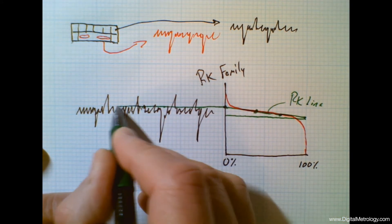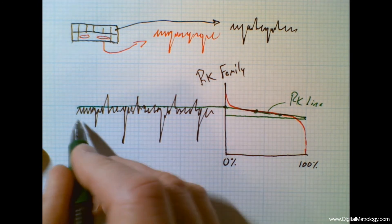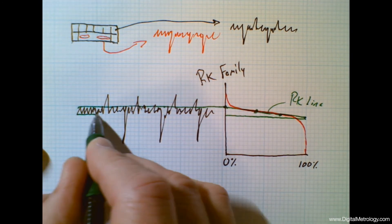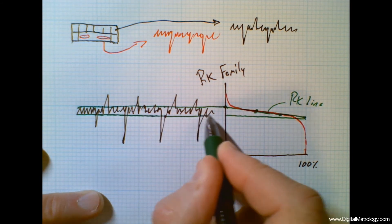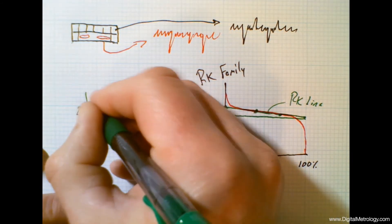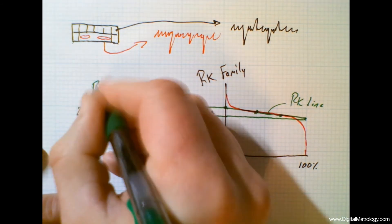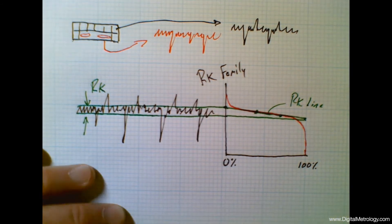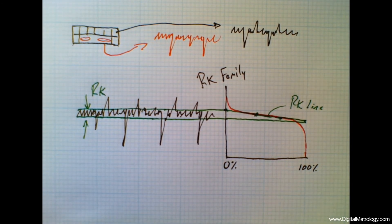This height right here is the middle of our sandwich. This height is the RK value itself — the RK number. It describes the peak to valley of our running surface, and this RK height is a very useful and stable parameter for lots of applications.